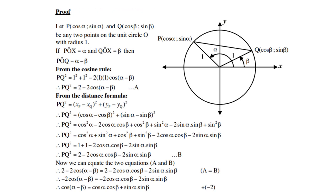Looking at the sketch: there is an angle beta, which is an acute angle in the first quadrant, and angle alpha, which is obtuse in the second quadrant. They are both on what we call the unit circle, because the radius is 1. That means Q will be (cos β, sin β) and P will be (cos α, sin α) on a unit circle. Angle POQ will then be alpha minus beta.